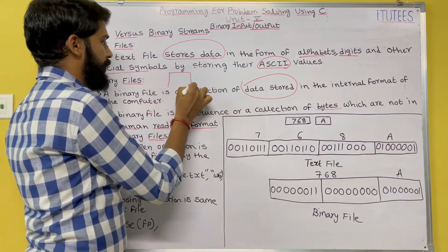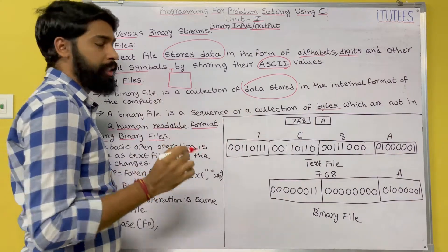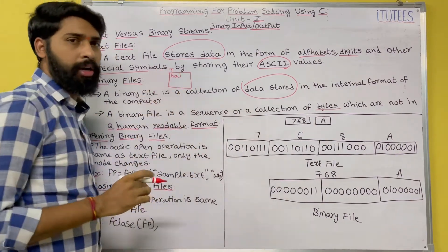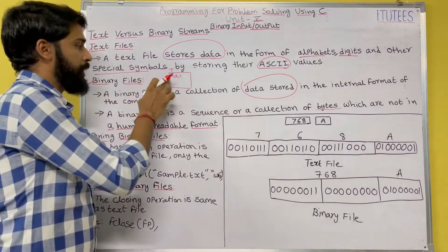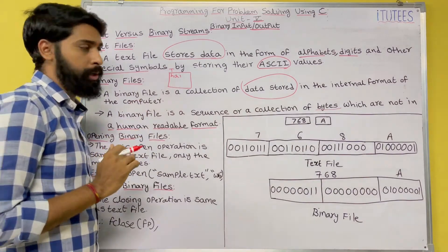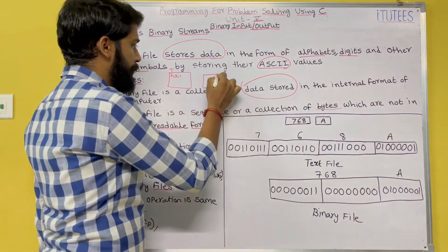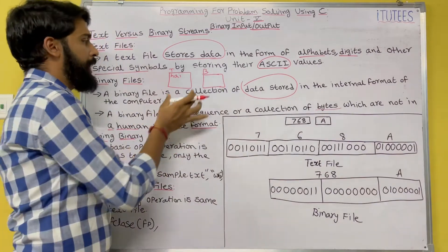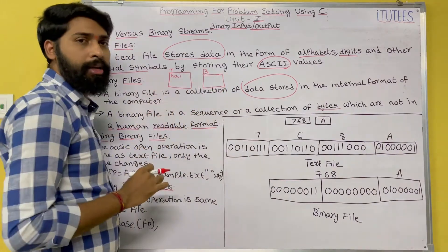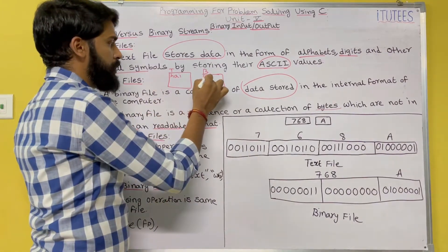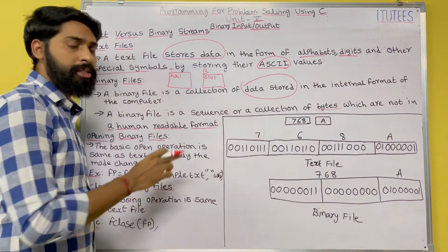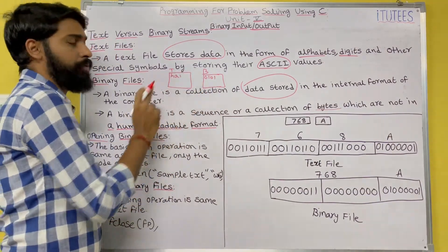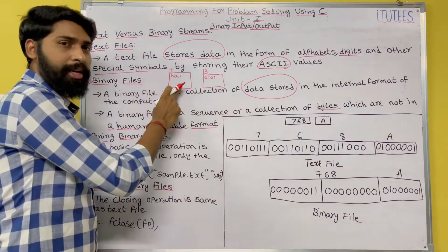For example, if I create a text file and write 'hi', the data is human-readable. But if I store 'hi' in a binary file, then that data is in 0s and 1s and is not in human-readable format. This is the basic difference between a text file and a binary file.